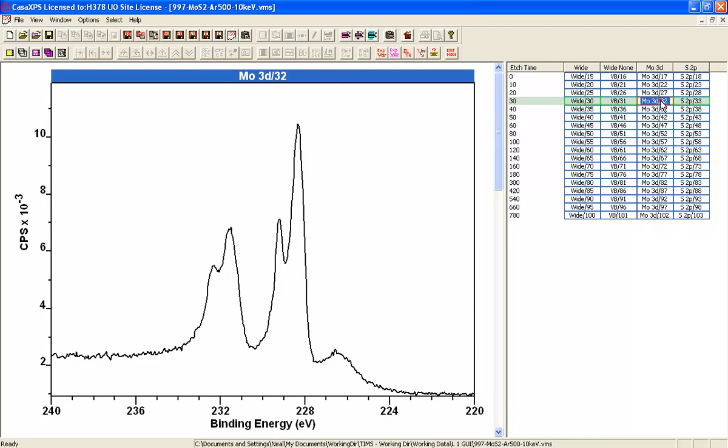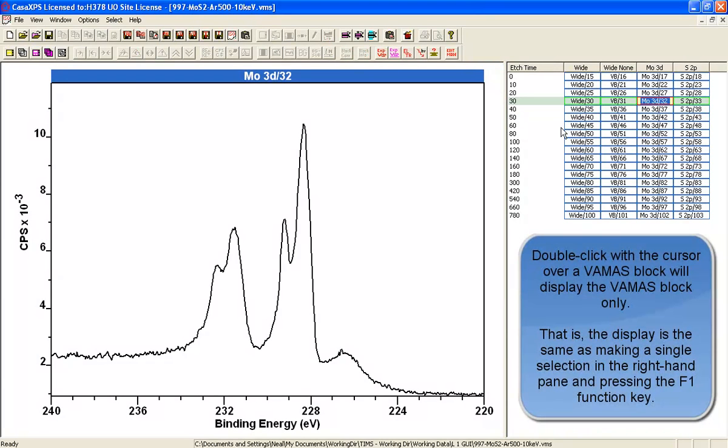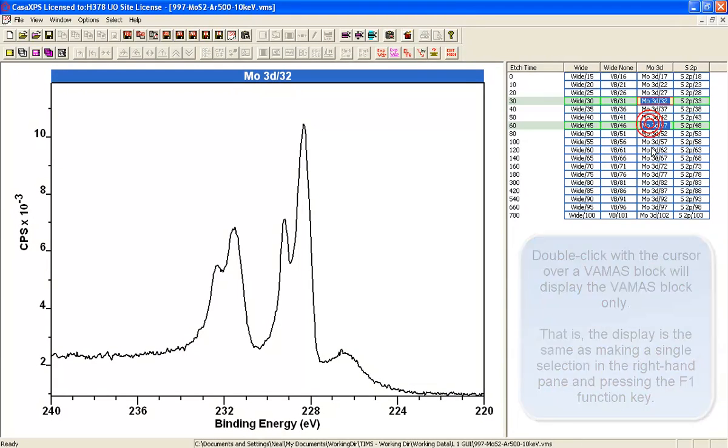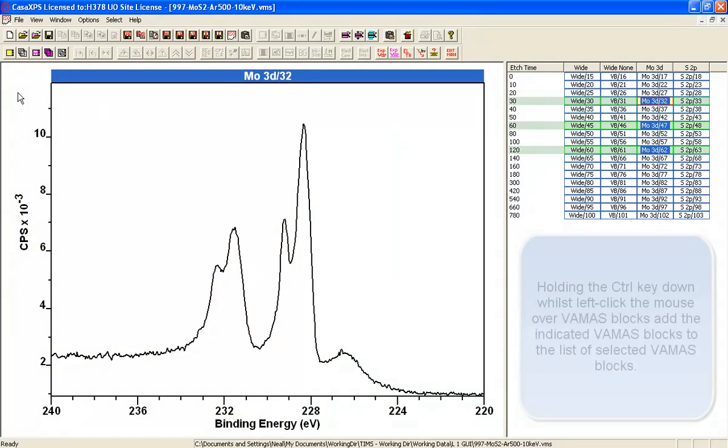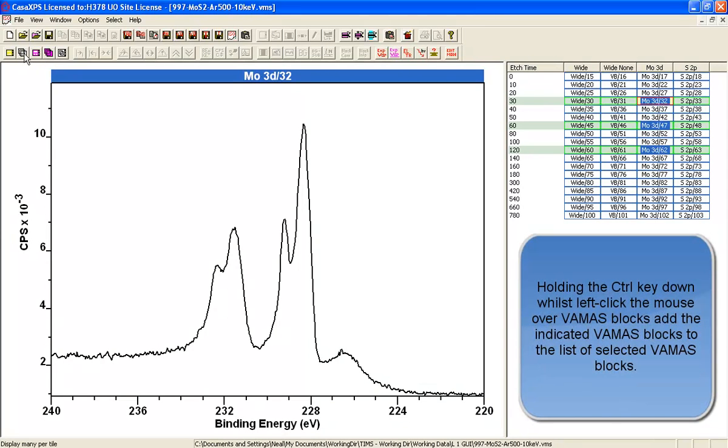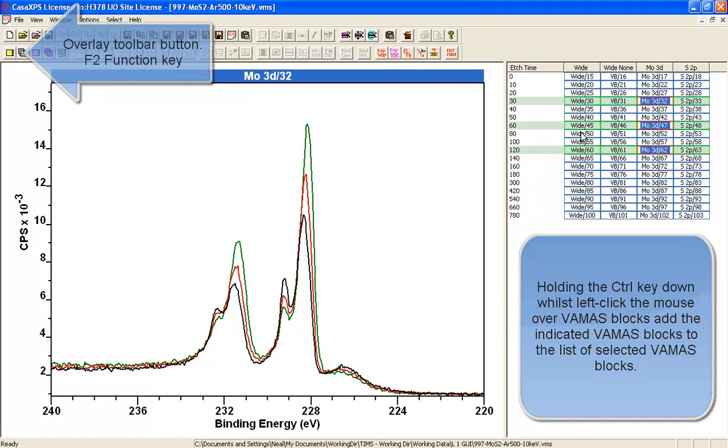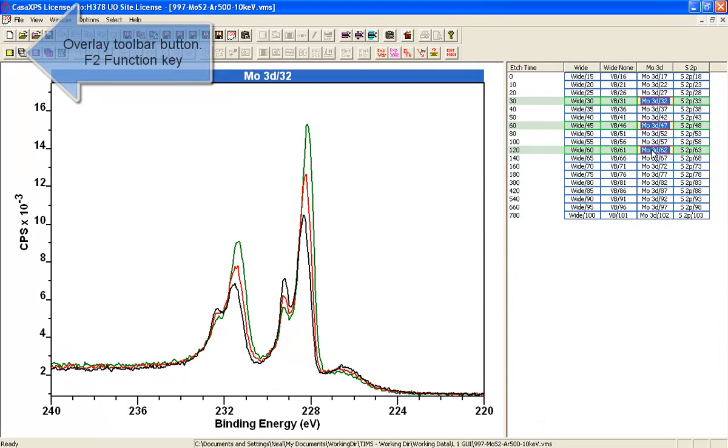Alternatively, if I double click on one of these, you can see that it now displays the one I've double clicked. I could make a selection holding the Control key down to add to the selection, then use the overlay to display the spectra that have been selected here on the right side.